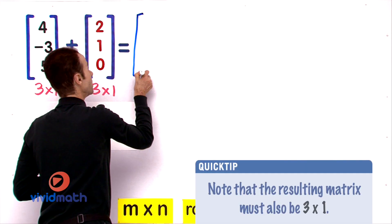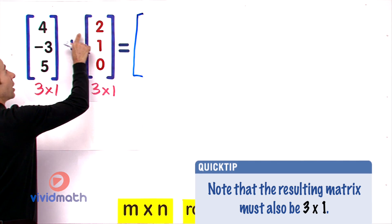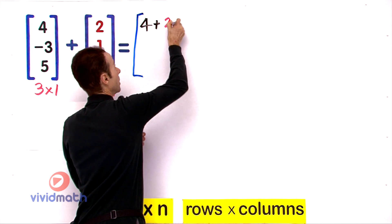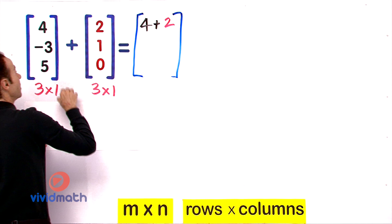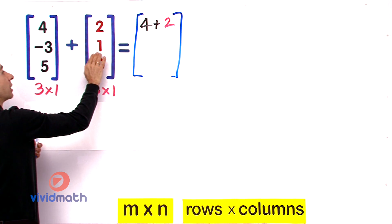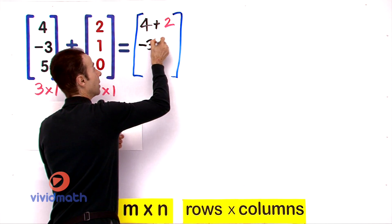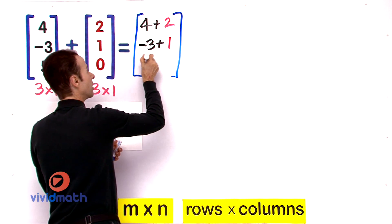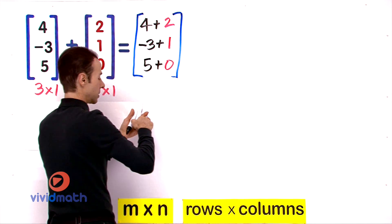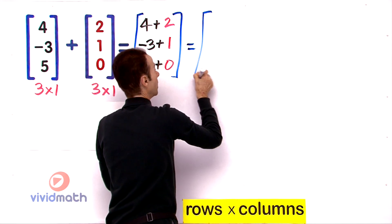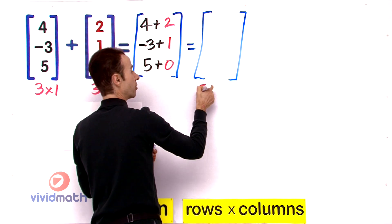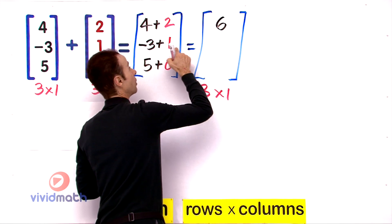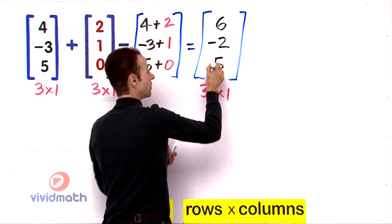We simply add the corresponding elements. Row one, column one: four and two — add them together. Row two, column one: negative three plus one. Row three, column one: five plus zero. All we have to do is simplify. The answer will be of the same order, three by one. Four plus two is six, negative three plus one is negative two, and five plus zero is five.